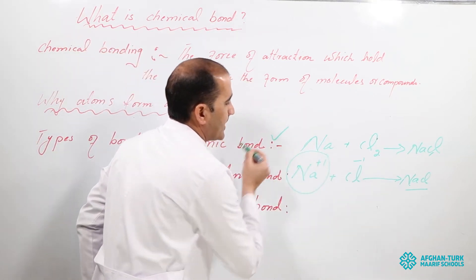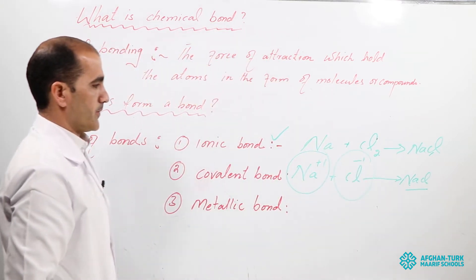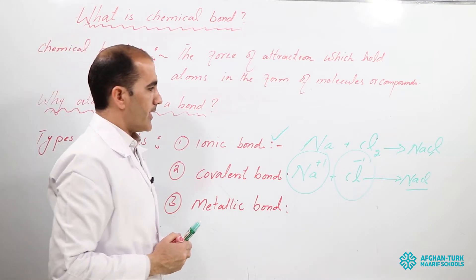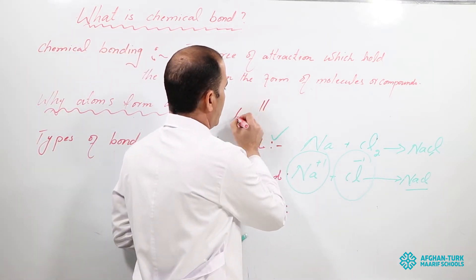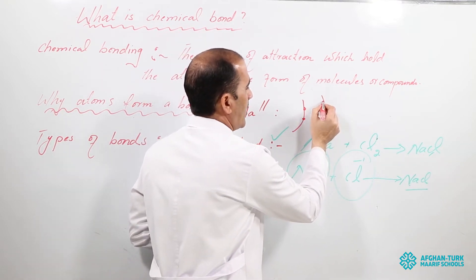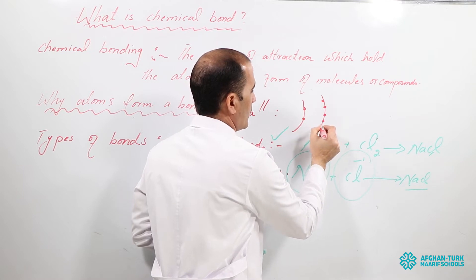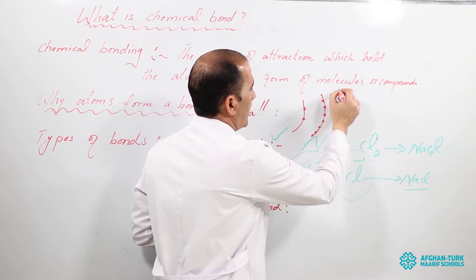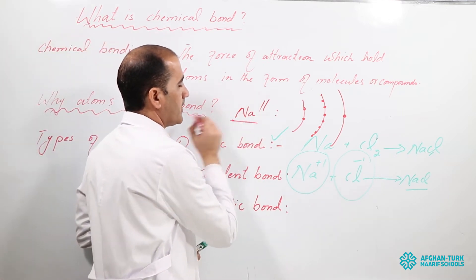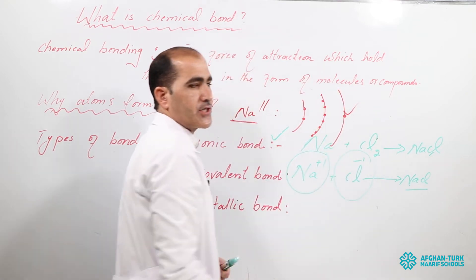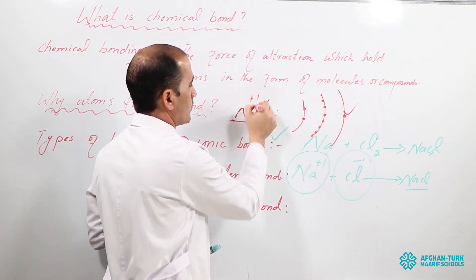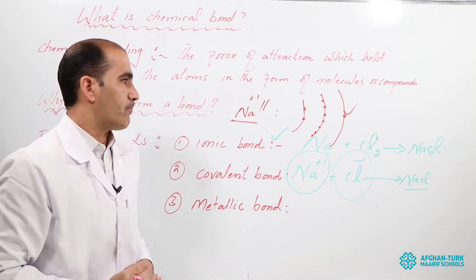Why does sodium form a plus one charge? Because sodium belongs to group number one and its atomic number is eleven. In the first shell there are two electrons, in the second shell there are eight electrons, and in the last shell there is one electron. Sodium wants stability, so when it loses one electron from the last shell, it has eight electrons and becomes stable — becoming a plus one charge.